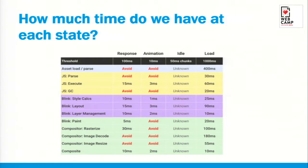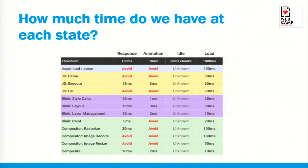At load, we have one second. At idle, we have small chunks of 50 to 100 milliseconds at each chunk. When a user clicks or taps on our screen, we have 100 milliseconds to react on that action. And after that, we have to match that budget of 16 or less milliseconds to have smooth animations.